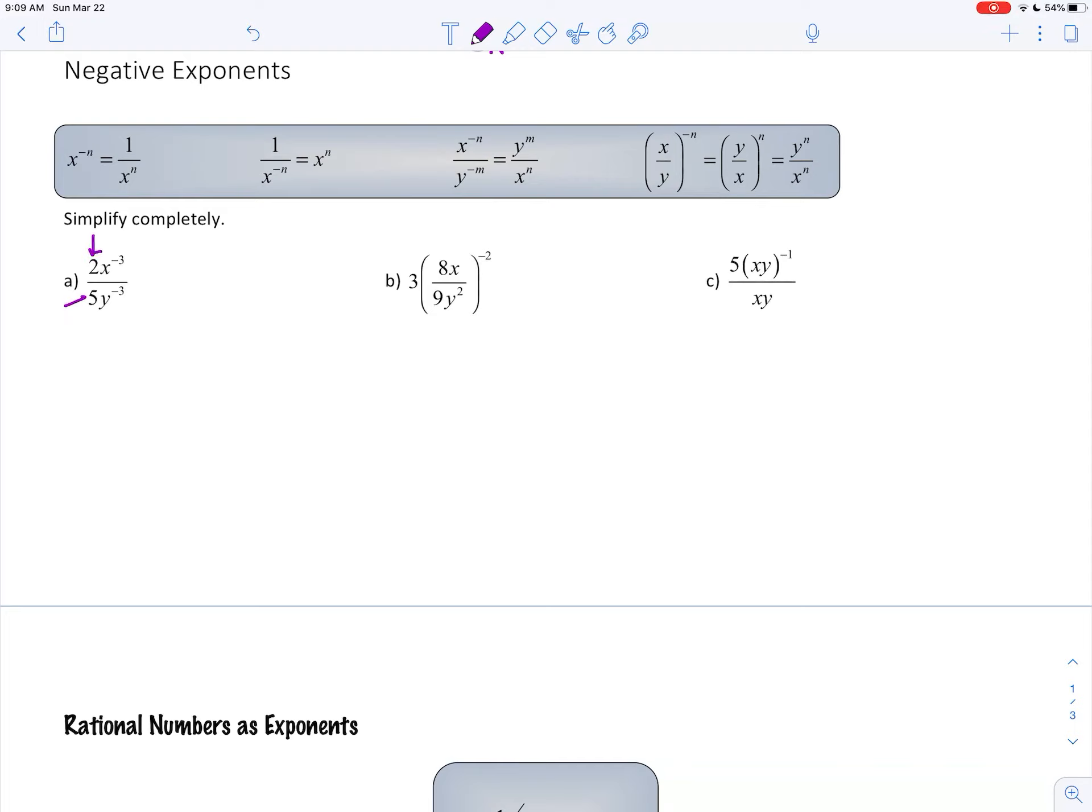The 2 and the 5 do not have exponents, so they do not have to move. The x to the negative 3, I'll move down, make it a positive 3. The y to the negative 3, I'll move up, make it positive 3.